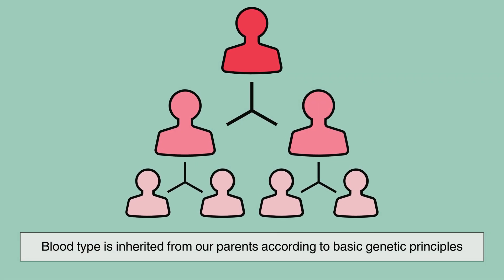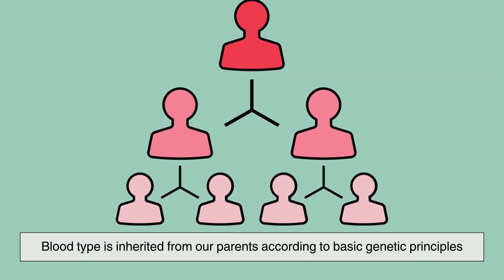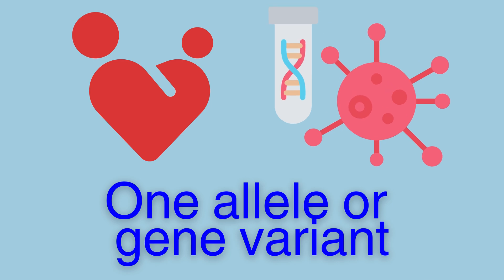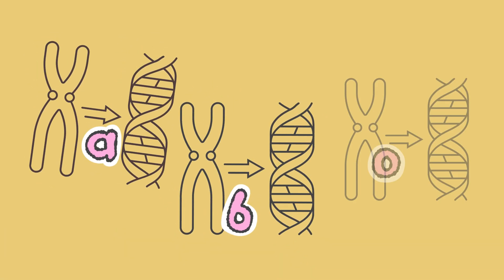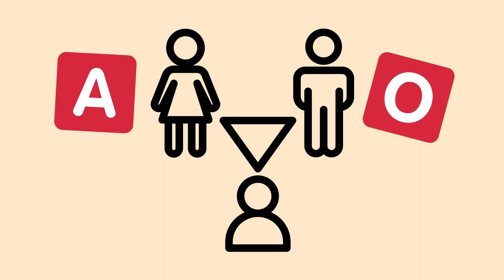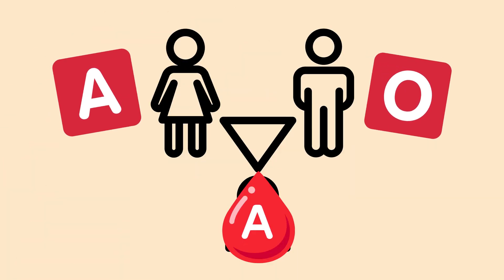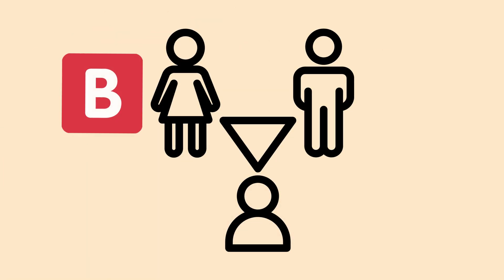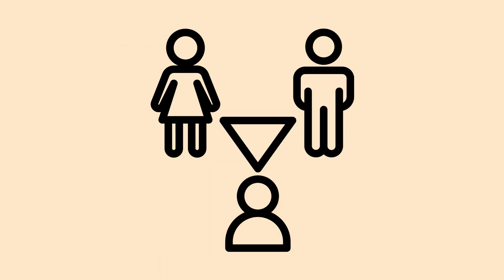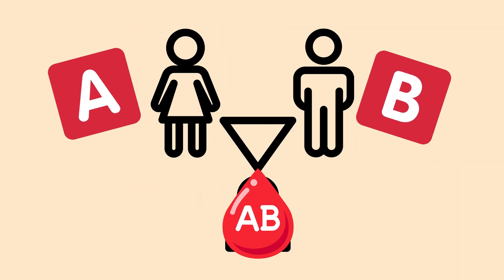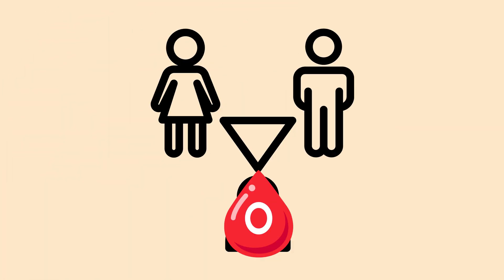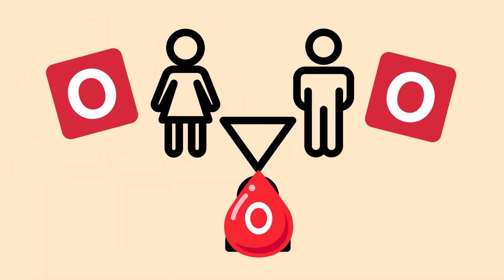Blood type is inherited from our parents according to basic genetic principles. Each biological parent contributes one allele, or gene variant, for blood type. The A and B alleles are dominant, while the O allele is recessive. This means that if a person inherits an A allele from one parent and an O allele from the other, their blood type will be A. The same rule applies to type B. If someone inherits both an A and a B allele, they will have AB blood, as both A and B alleles are codominant. To have type O blood, a person must inherit two O alleles, one from each parent.